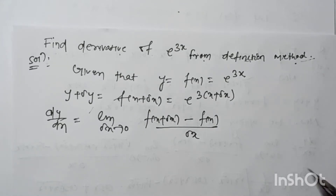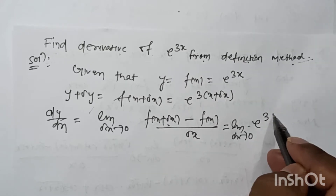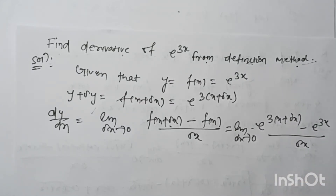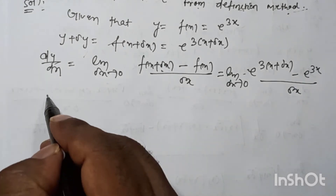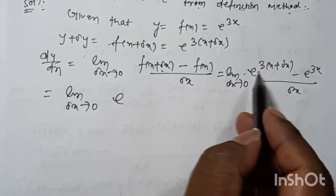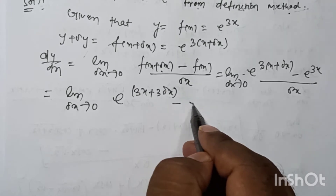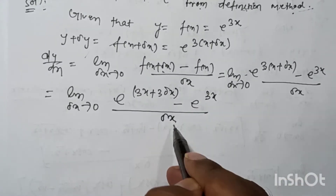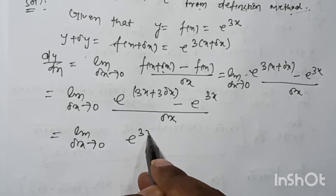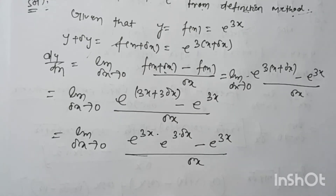Putting in this value: limit as δx tends to 0 of [e to the power (3x + 3δx) minus e to the power 3x] divided by δx. That is: limit as δx tends to 0 of e to the power 3x times e to the power 3δx, minus e to the power 3x, all divided by δx.